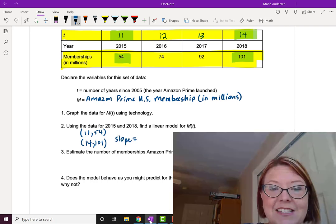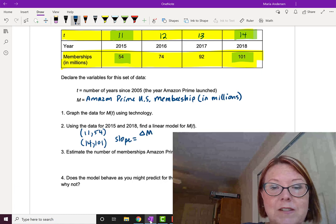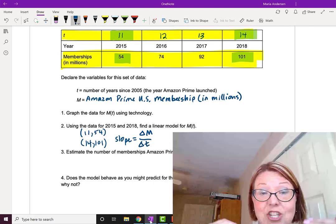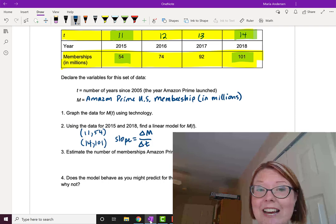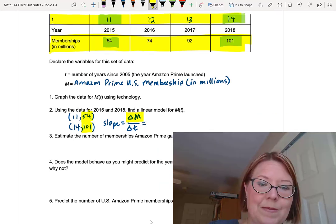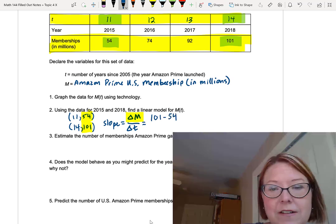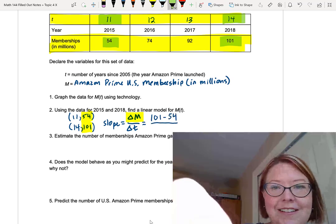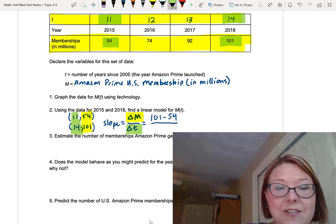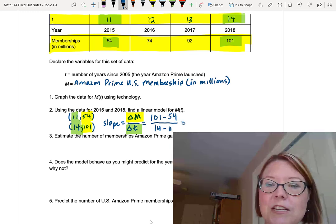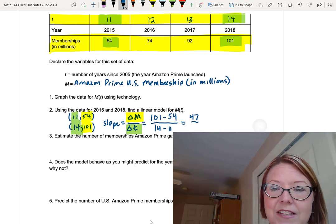Now all we have is two points and when we only have points and we need a linear model, the very first thing we always have to do is find the slope. In this case, the slope is going to be the change in membership, delta M, over the change in time. And I know which one is which because the change in the independent variable, which is time, always goes on the bottom. Starting with delta M, 101 minus 54, that's the numerator, and then delta T is 14 minus 11, which is the denominator. 101 minus 54 is 47, and 14 minus 11 is 3.